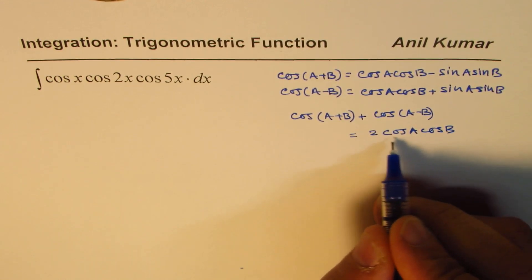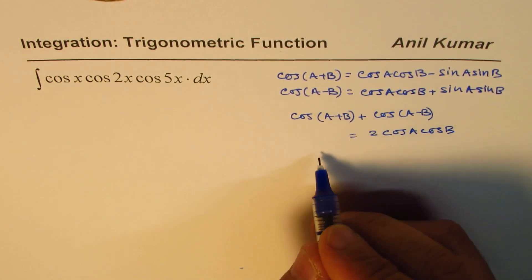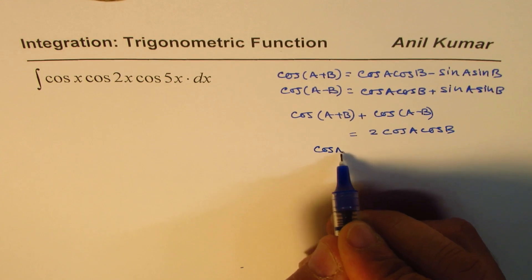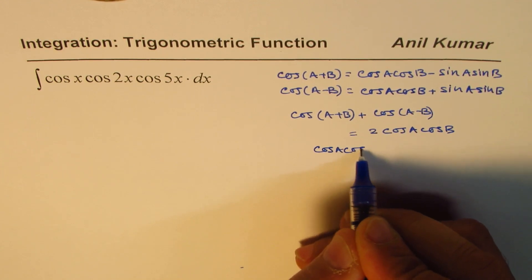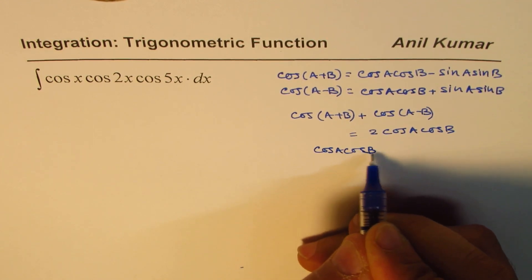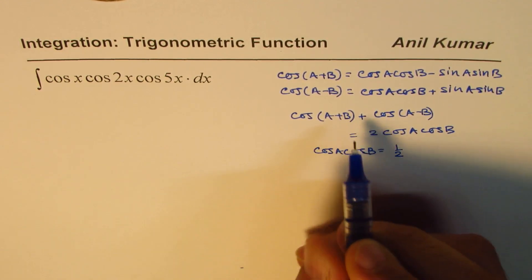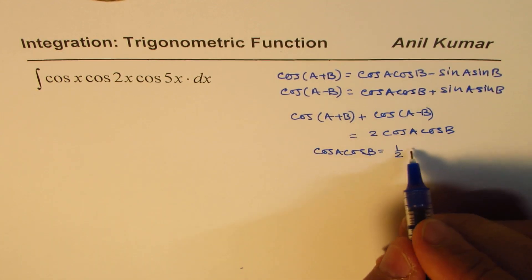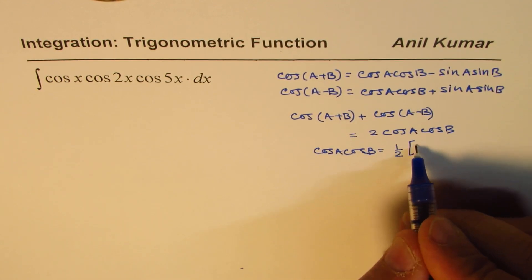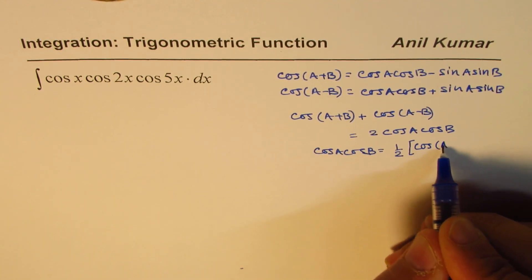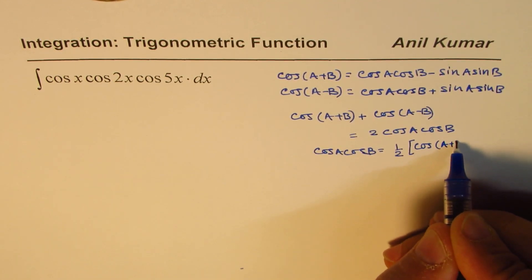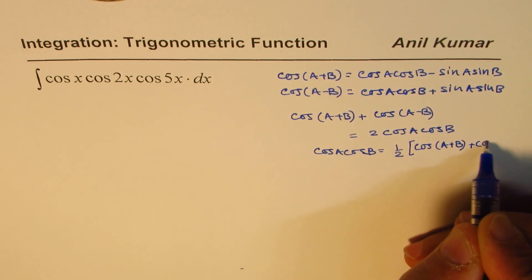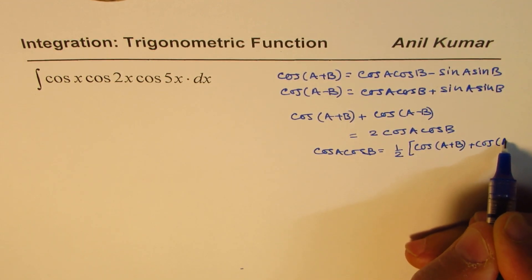So you could write cos·a·cos·b as half of the sum of these two, which is: cos·a·cos·b equals half of cos(a+b) plus cos(a-b).